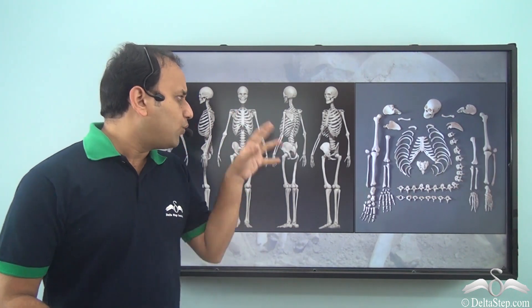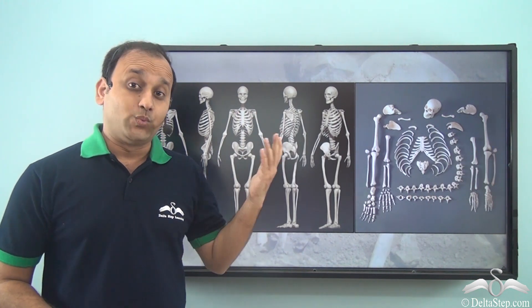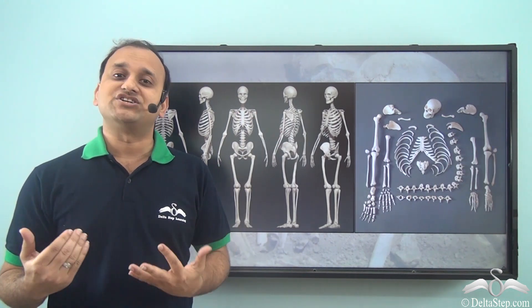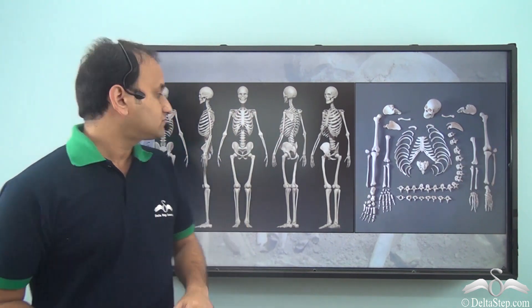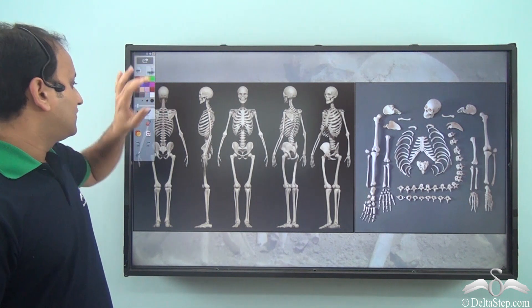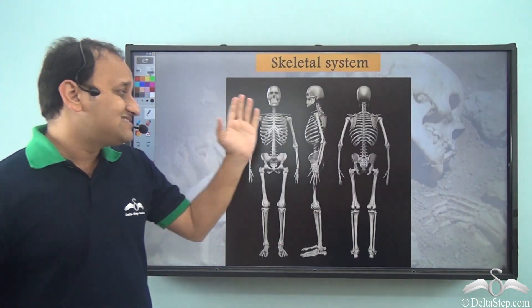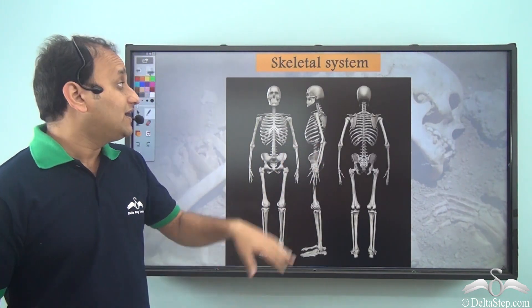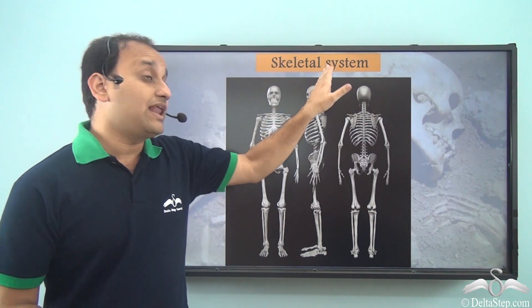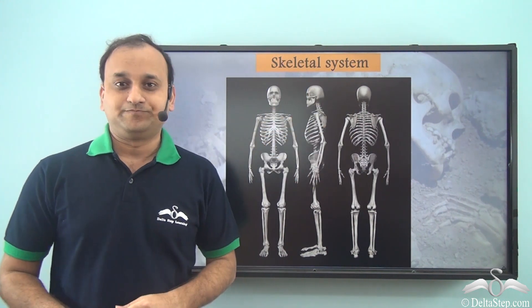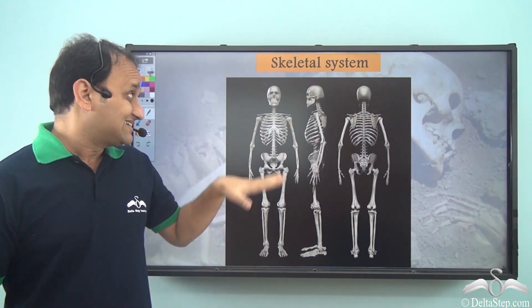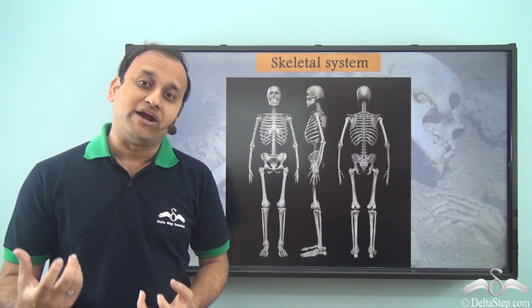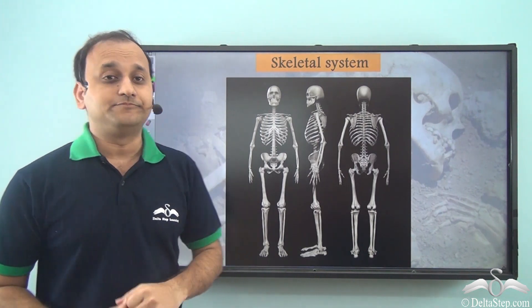So what exactly is this structure? Well, this structure has a special name. Since it is a system of bones, we call it the skeletal system. The skeletal system is a very important component of our body.